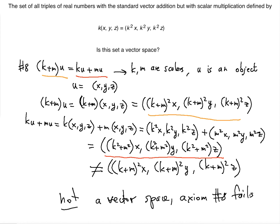Once the axiom fails, you don't have to check any other axiom because you just showed that as long as one of the axioms fails, not a vector space. That's it.